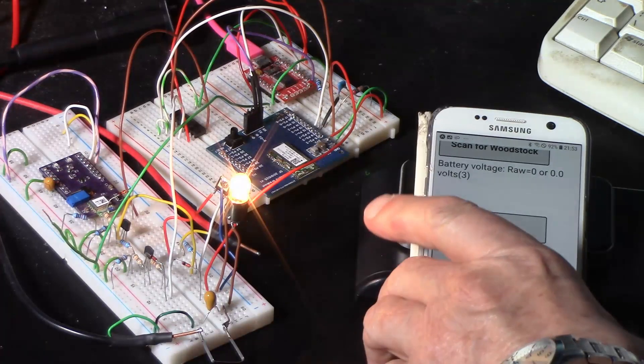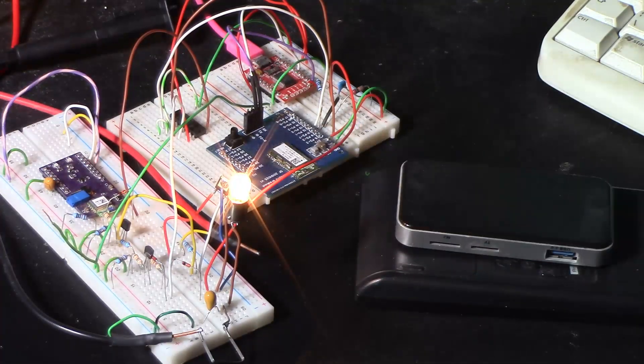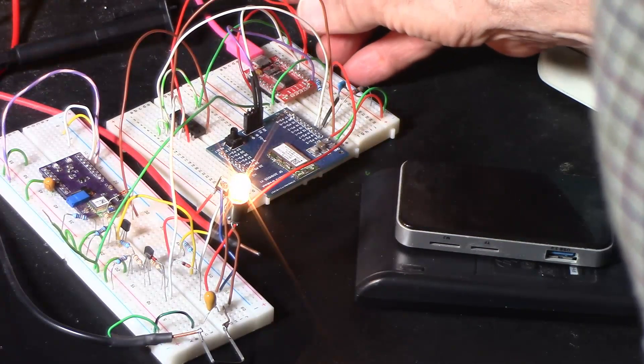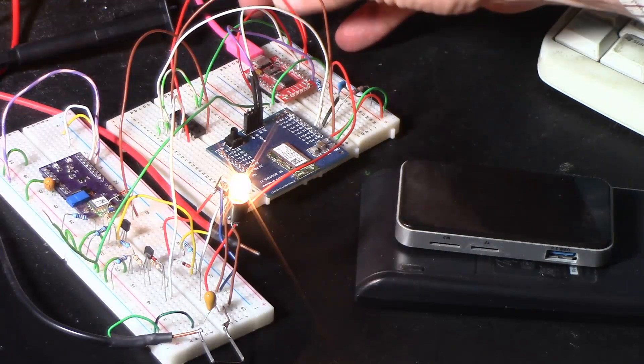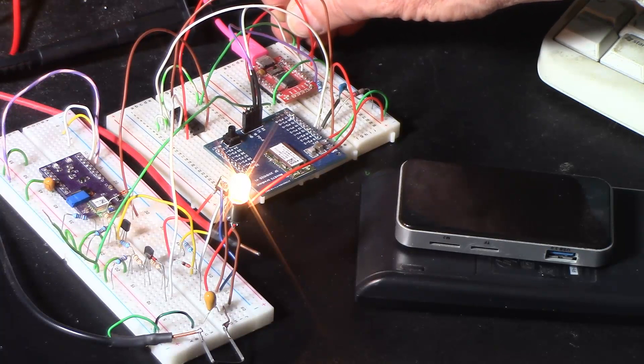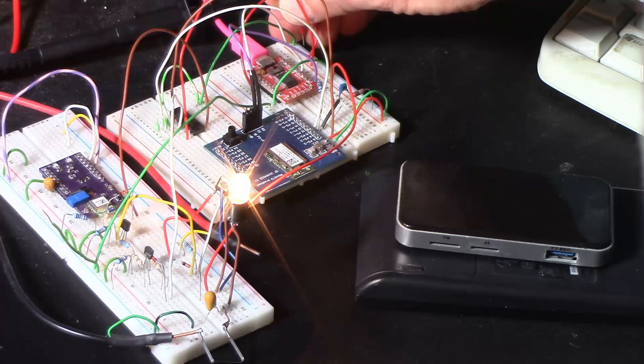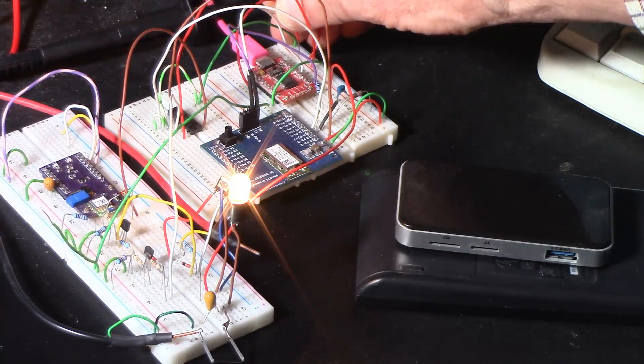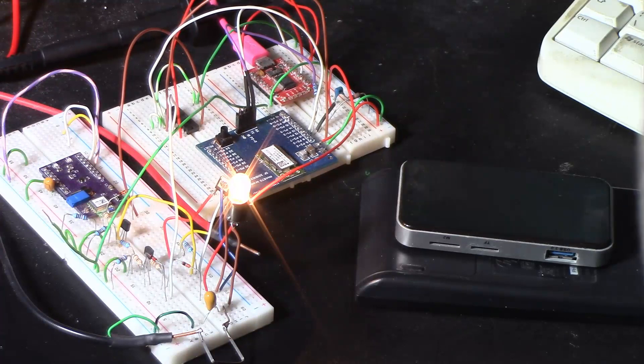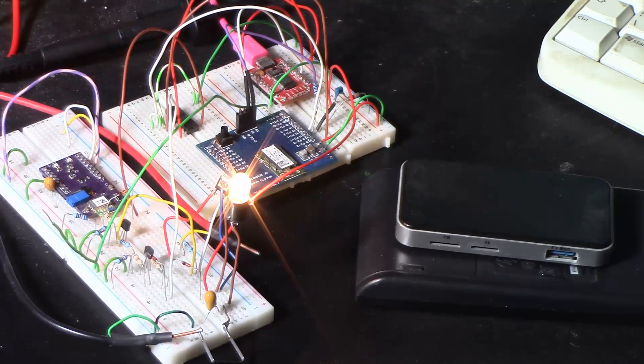So I've now disconnected the phone, but it still stays on. And if I disconnect the power from the Bluetooth, simulating the battery going down, it still stays on. And I've tested the other combinations. So that is basically working.